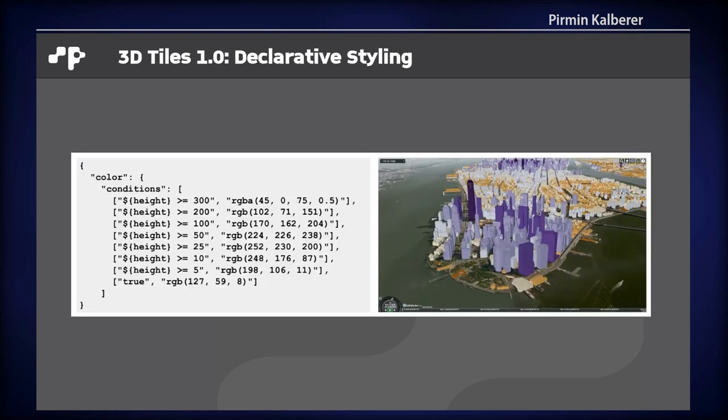What Cesium also provides, and this is also in the standard, is declarative styling. They have a styling language in JSON. Here is an example: you can add colors depending on certain properties — here it's the height property — and define conditions for coloring the tile set.